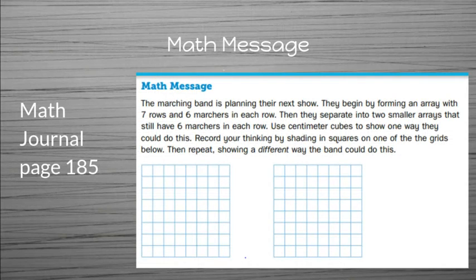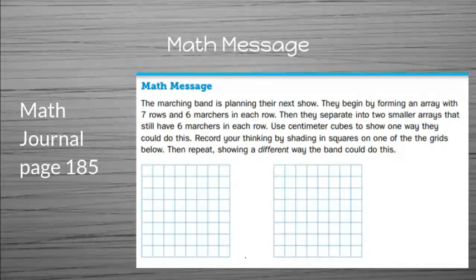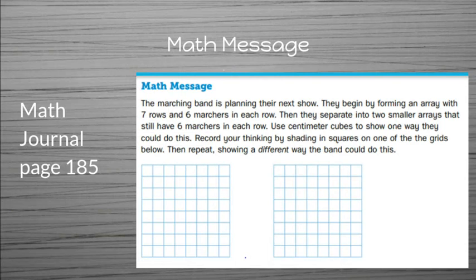So turn in your math journal to page 185, and we're going to look at the top at the math message, and it says, The marching band is planning their next show. They begin by forming an array with 7 rows and 6 marchers in each row. Then they separate into two smaller arrays that still have 6 marchers in each row. Use centimeter cubes to show one way that they could do this. Record your thinking by shading in squares on one of the grids below. Then repeat, showing a different way.